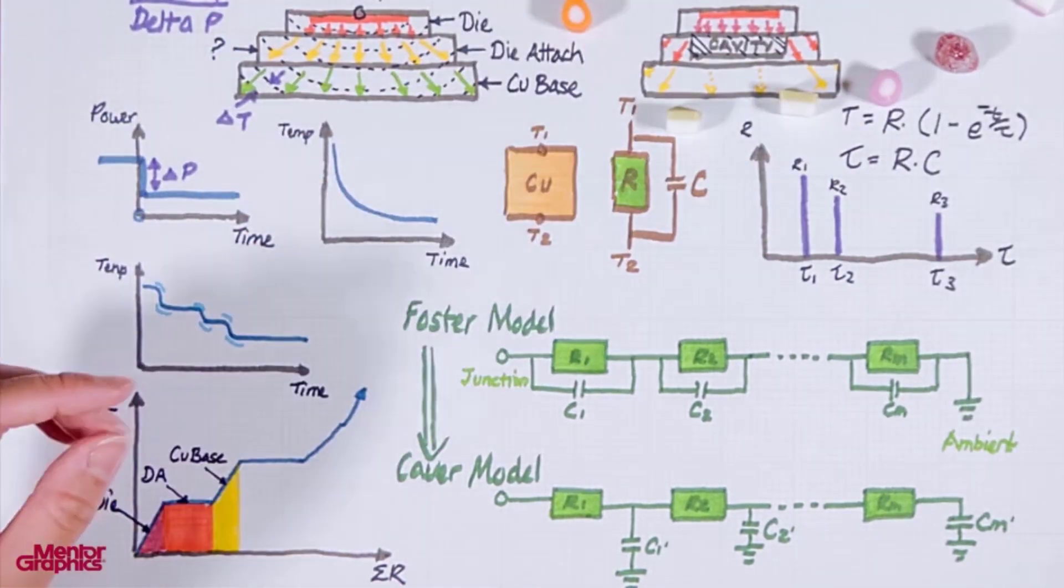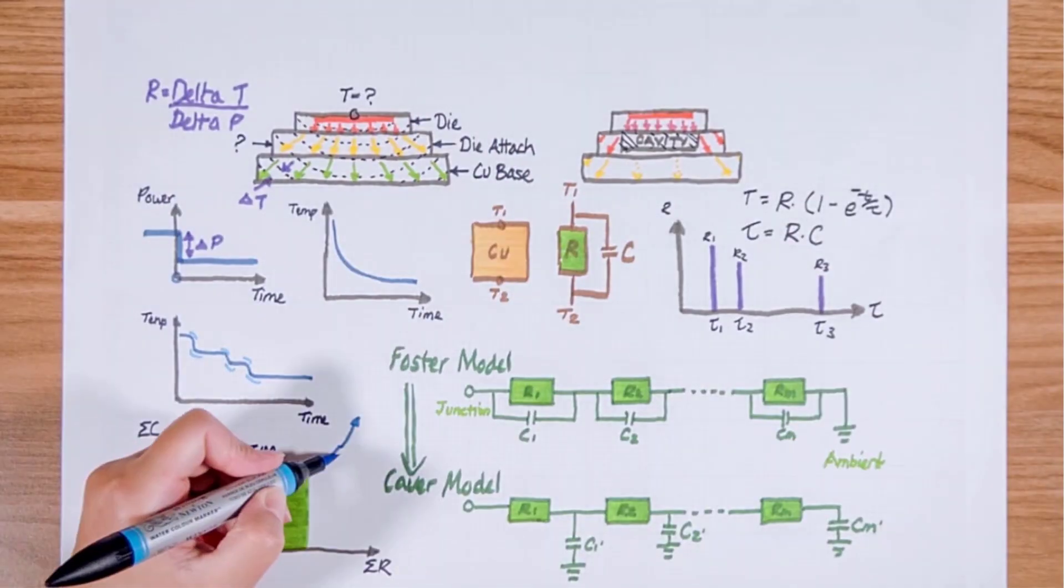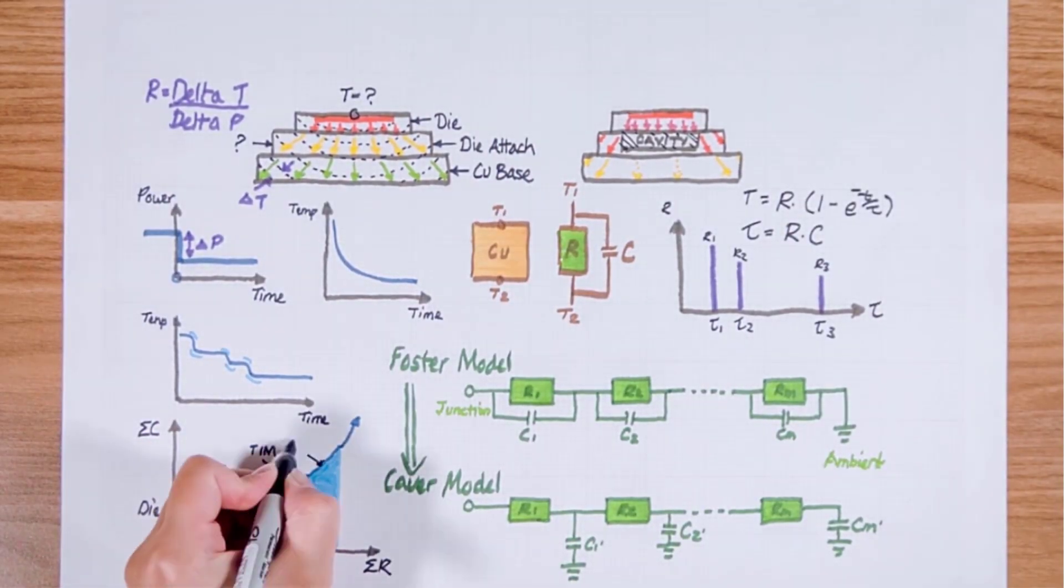If there is additional thermal interface material after the curve will flatten out then go steep again as you hit a cold plate then the whole thing will cool down and go into infinite capacitance.